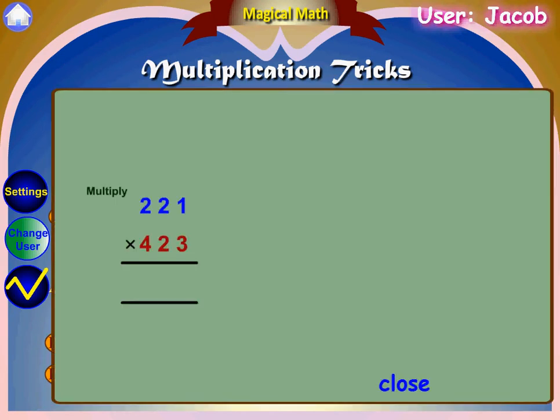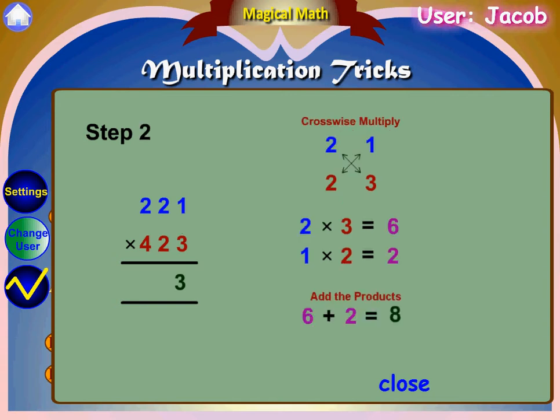Let's apply these steps to multiply 221 and 423. Step 1: vertically multiply 1 and 3. 1 times 3 equals 3.